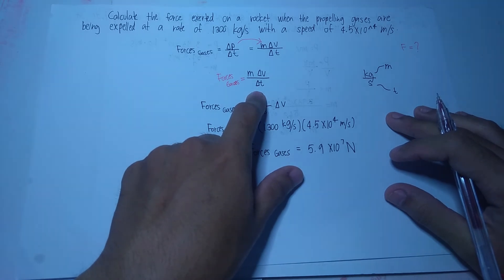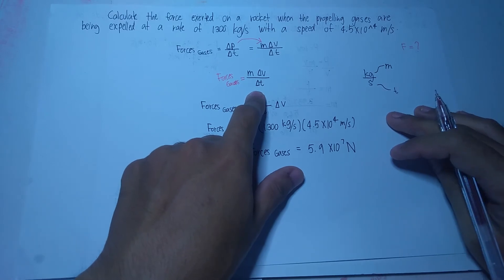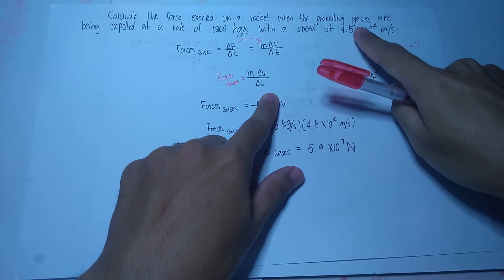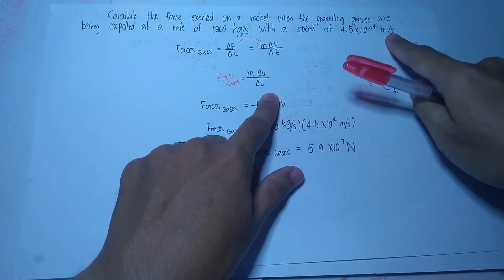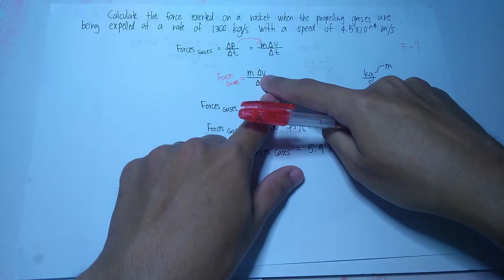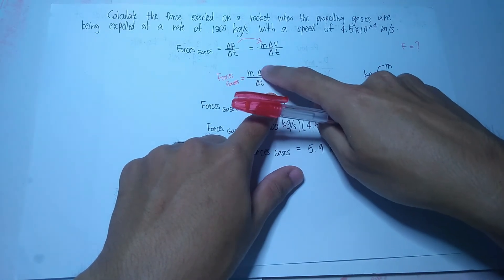Masosolve na natin ito by simply substituting yung mga given na value. Dahil given na sa atin itong 4.5x10 raised to 4 meters per second, it will serve as yung velocity or yung change in velocity. Pwede na natin i-substitute dyan yan.